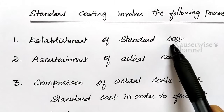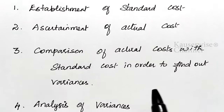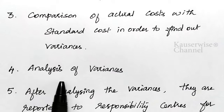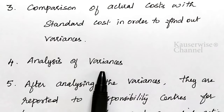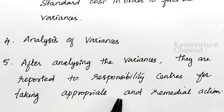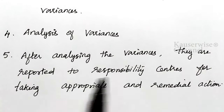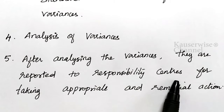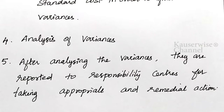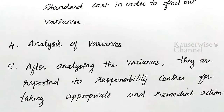To repeat: first, establishing standards; second, ascertainment of actual cost; third, compare standard cost and actual cost to find out the variance; fourth, variance analysis — finding whether it is favorable or unfavorable; and fifth, reporting the results to the responsibility center for taking appropriate and remedial actions. These are the five important processes under standard costing.